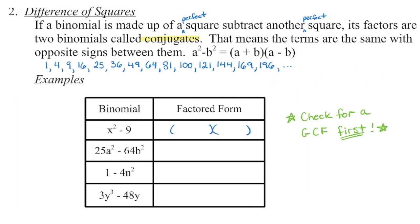One bracket is a plus, one is a minus. Square root the first term, square root the second term. We can even check this: when we FOIL back, x times x is x squared. Negative 3x plus 3x is 0 — that's why we don't see an x term in there. Then multiply the last terms: 3 times negative 3 gives us negative 9.